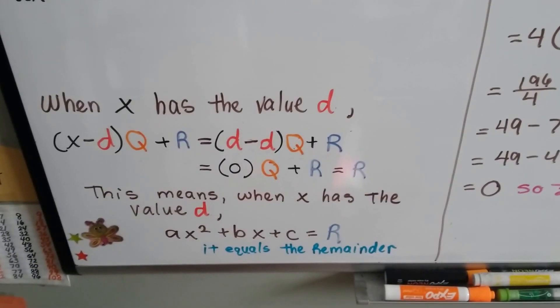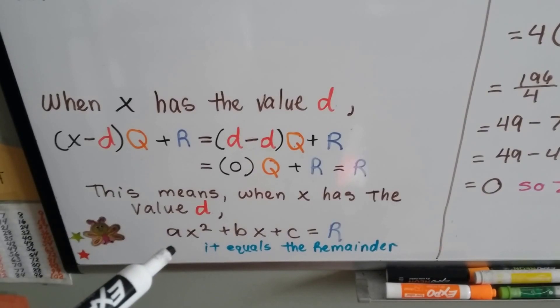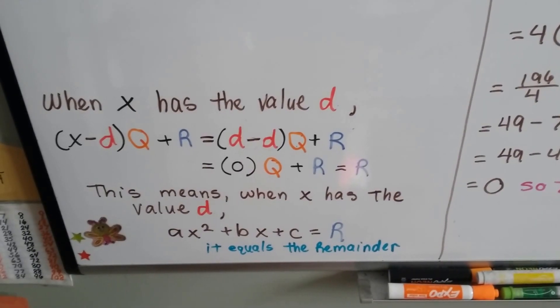And it means when x has the value of d, some certain number, then the polynomial is going to equal the remainder.